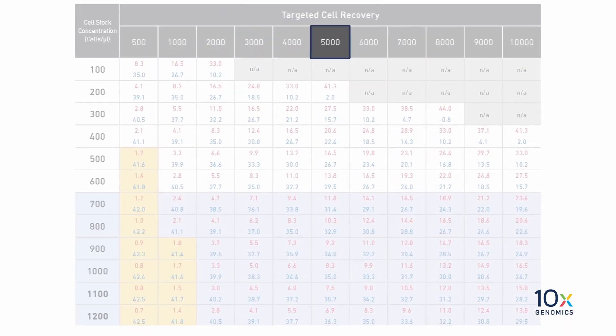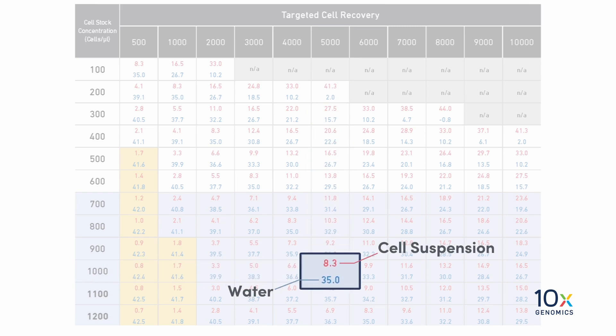In this experiment we are targeting 5000 cells and our cell suspension contains 1000 cells per microliter. As a result we need to load 35 microliters of water and 8.3 microliters of cell suspension into the master mix.